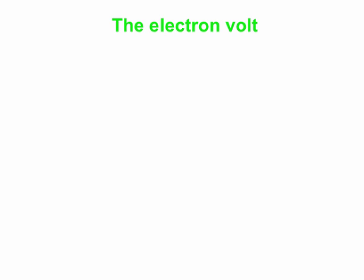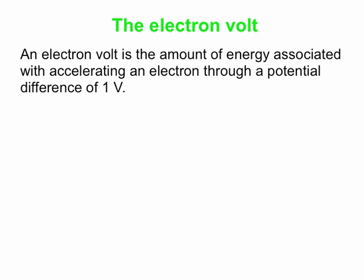Before we get there, we're going to talk about the electron volt, which is a unit of energy. It's handy when you're dealing with electrons. The electron volt is the amount of energy associated with accelerating an electron through a potential difference of one volt. So you take an electron, release it from rest, put it between two parallel plates with a potential difference of a volt across the plates. The electron accelerates across the gap, and when it gets to the other side, it's got an energy of one electron volt.